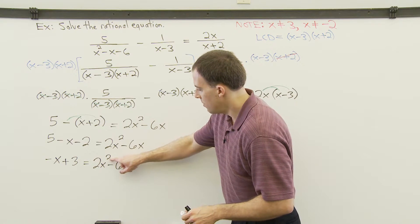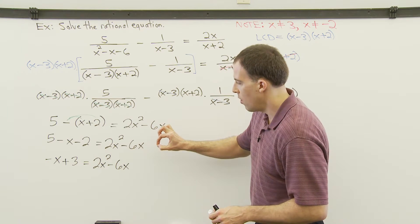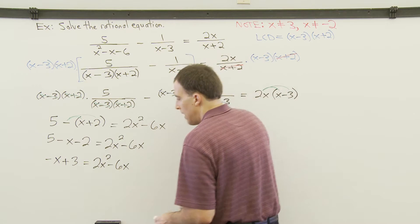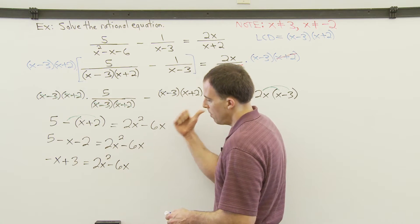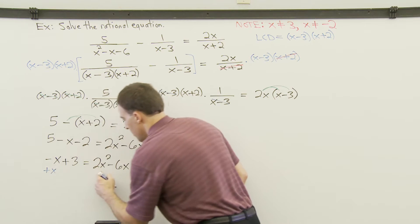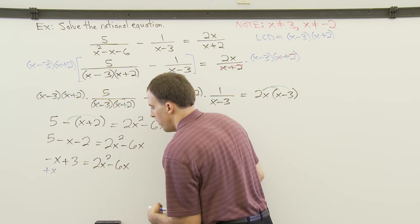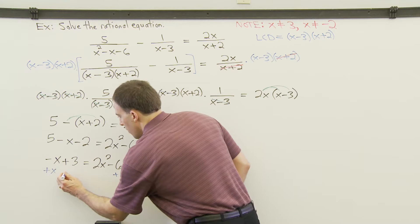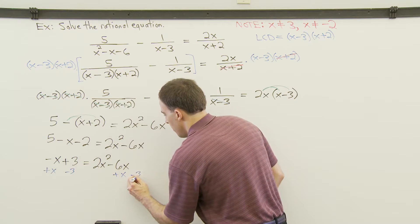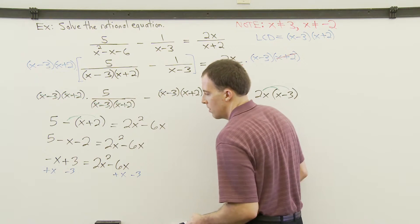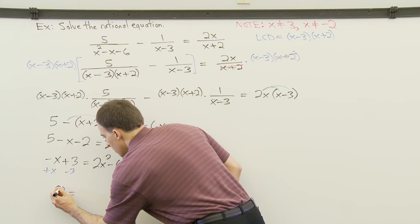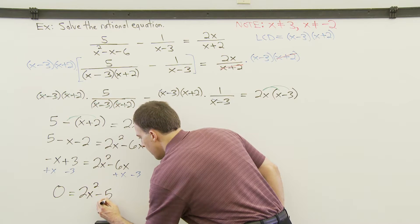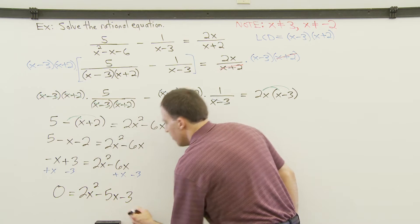Since it's a quadratic equation — degree 2 — we've got to set it equal to 0 and solve by factoring using the zero product rule. We'll bring all terms to the right side since the x squared term is already there with a positive coefficient. Adding x to both sides and subtracting 3 from both sides gives us 0 equals 2x squared minus 5x minus 3.